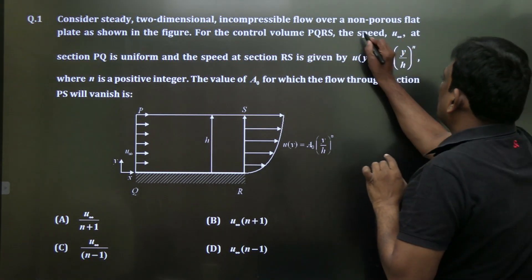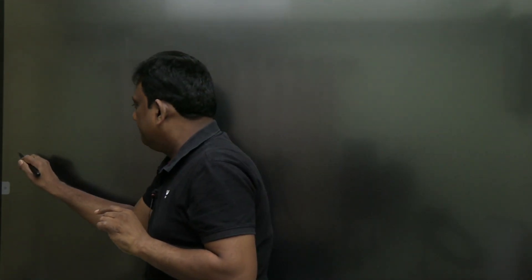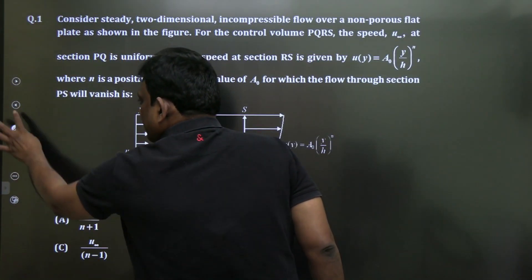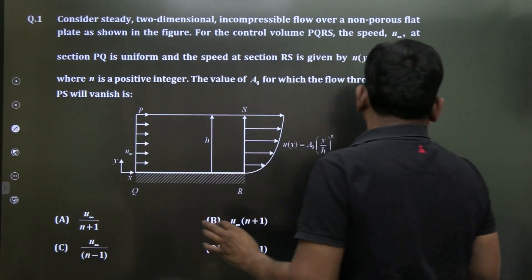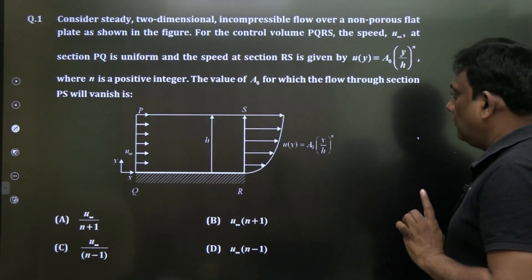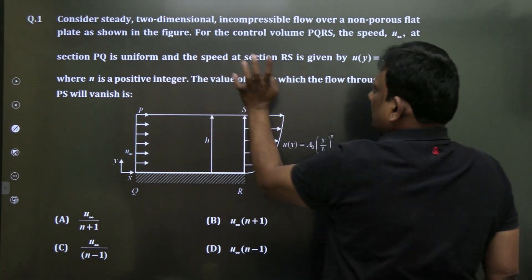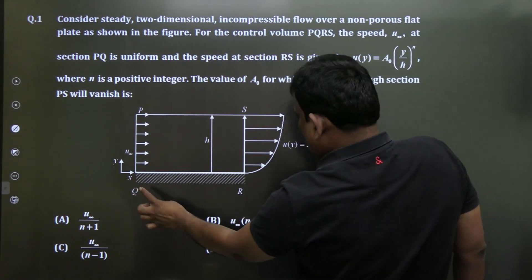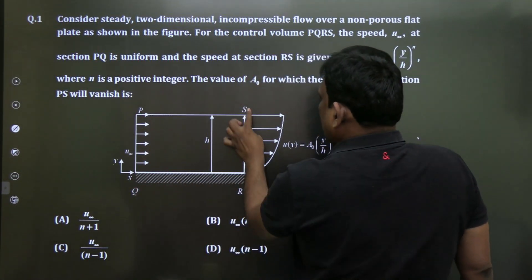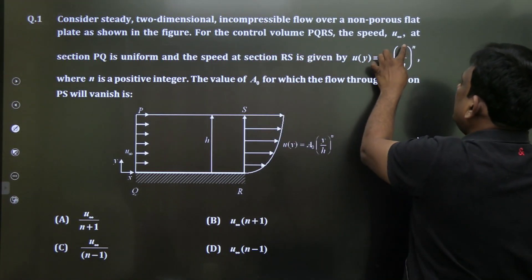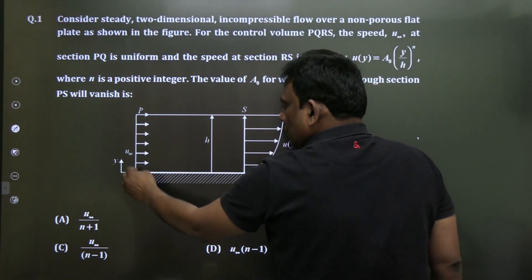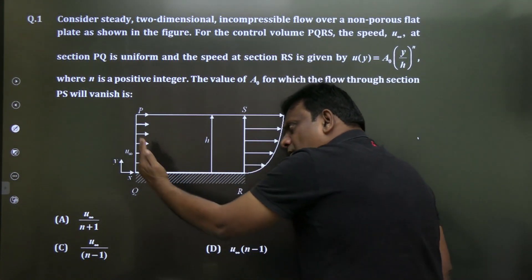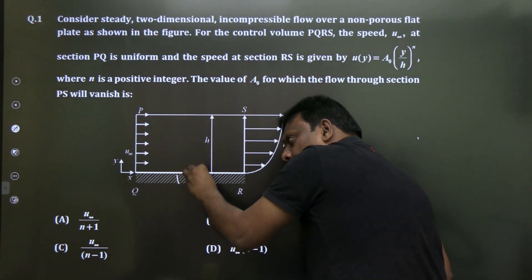Please focus on this word: non-porous. Consider the steady two-dimensional incompressible flow over a non-porous flat plate shown in the figure. For the control volume PPQRS, the speed u-infinity at section PQ is the free stream velocity.